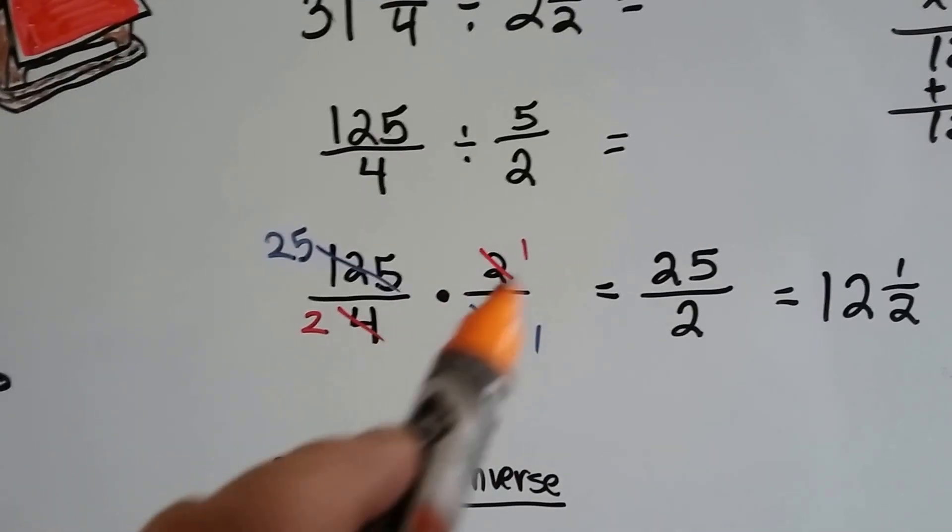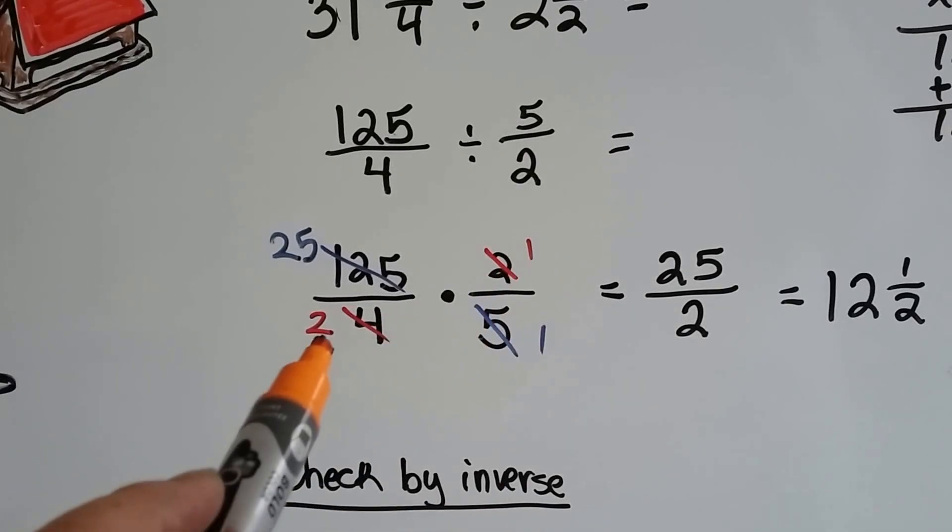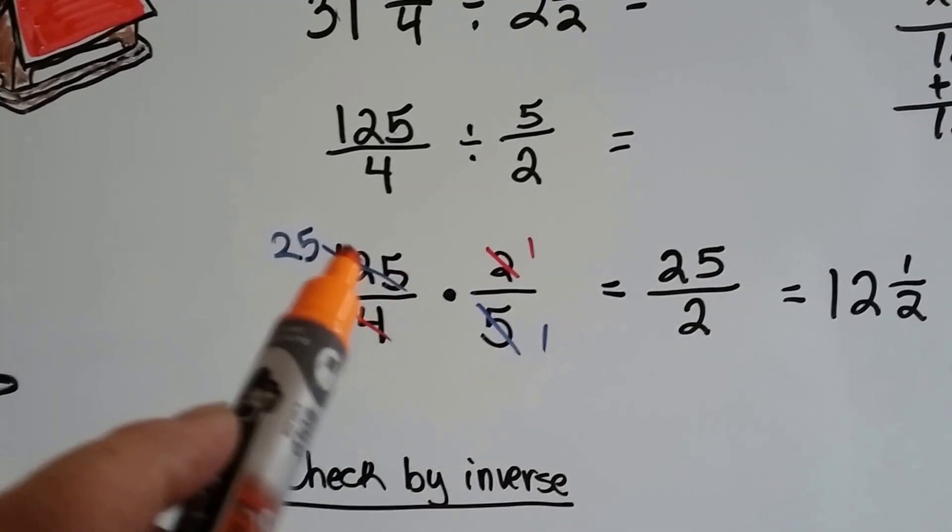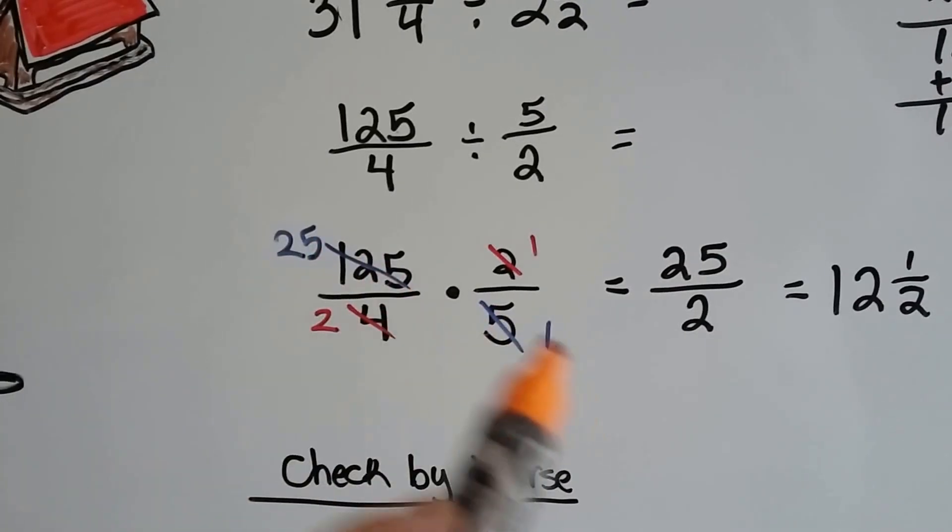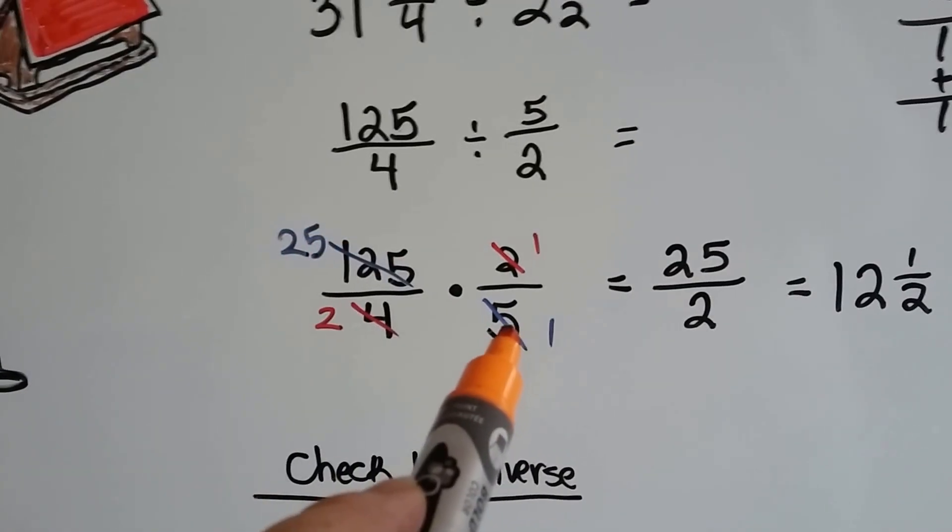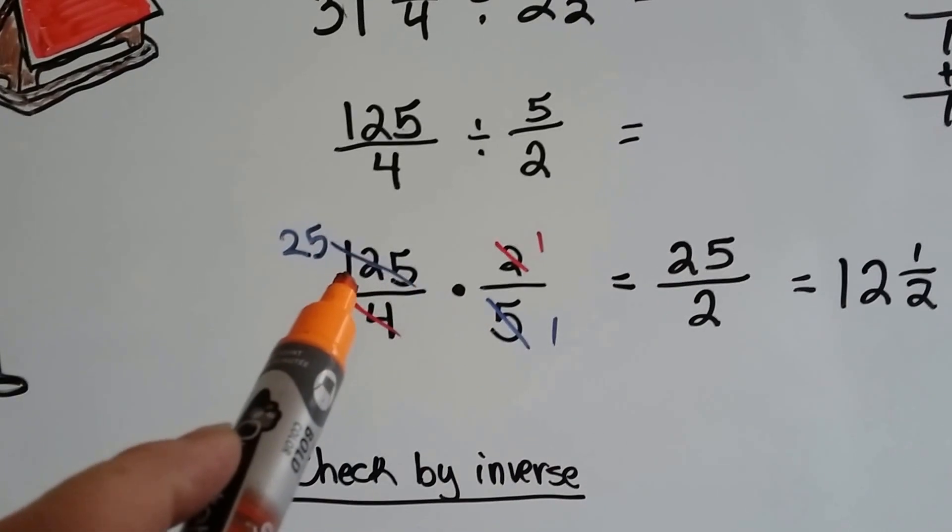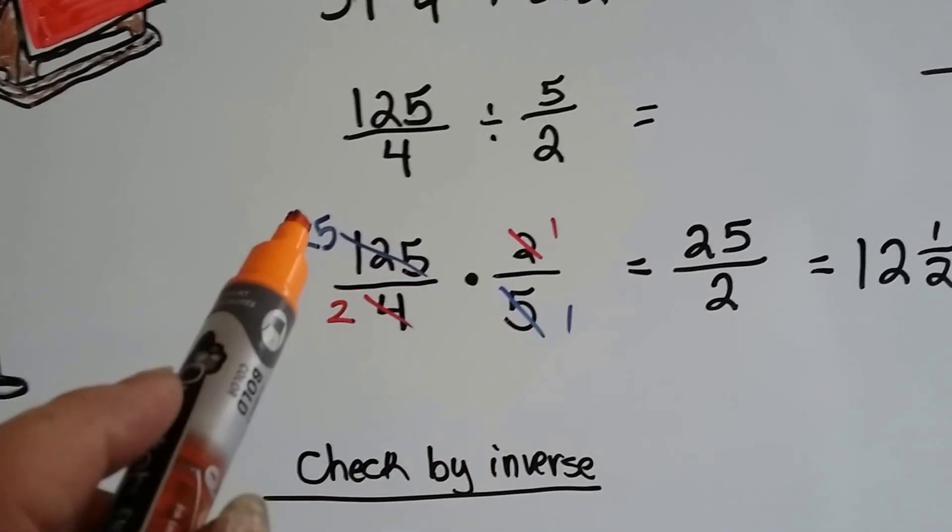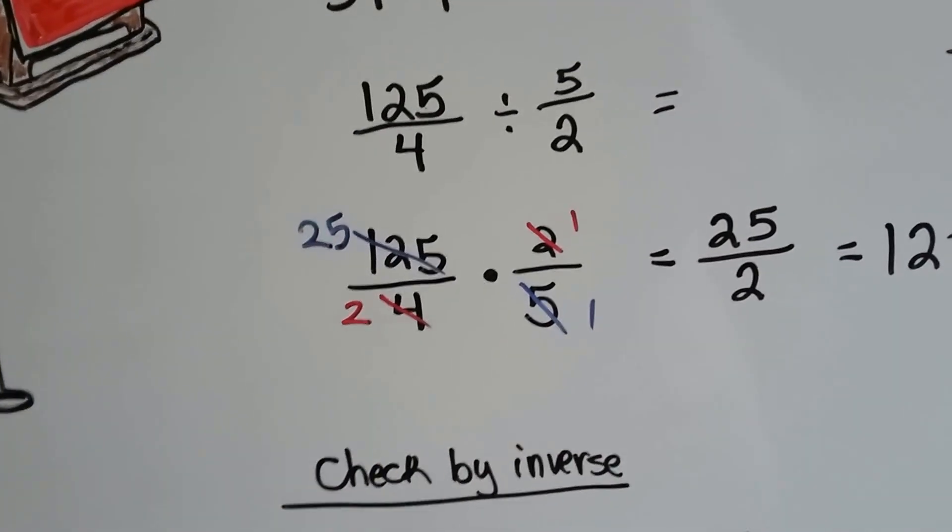Now we can cancel out. The two and the four cancel out to a one and a two. Two goes into two one time. It goes into four two times. And the five and the one twenty-five can cancel out as a one. Five goes into five one time. And it goes into one hundred and twenty-five twenty-five times. So we can even have a big number like that when we cancel out.